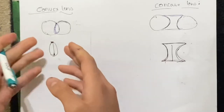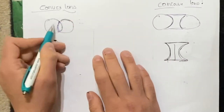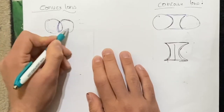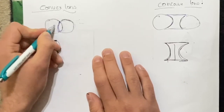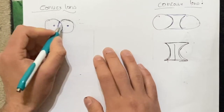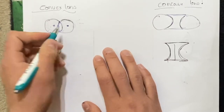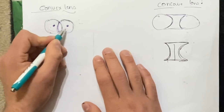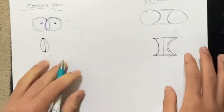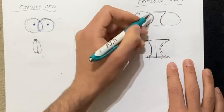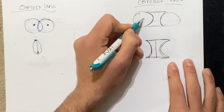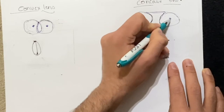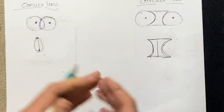For a convex lens, both of these spheres have a center. The centers of the spheres of which this lens is a part are called the center of curvature. The same goes with the concave lens — the spheres have a center, and that is also called the center of curvature.